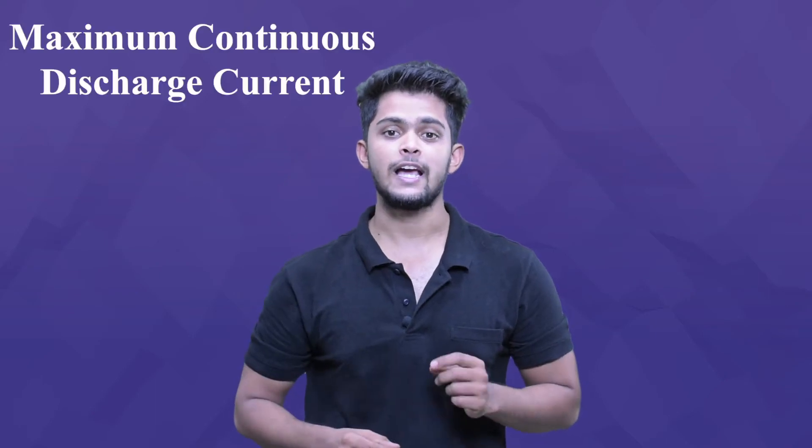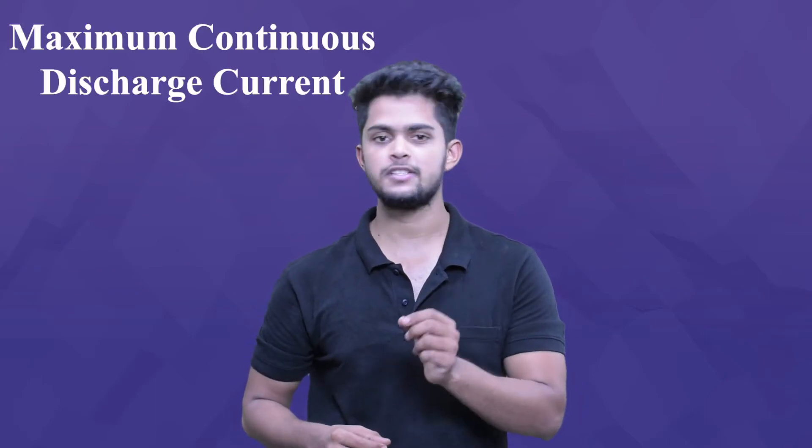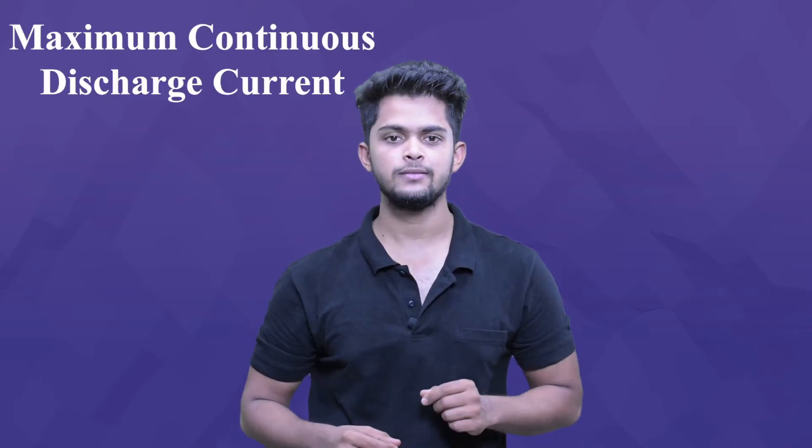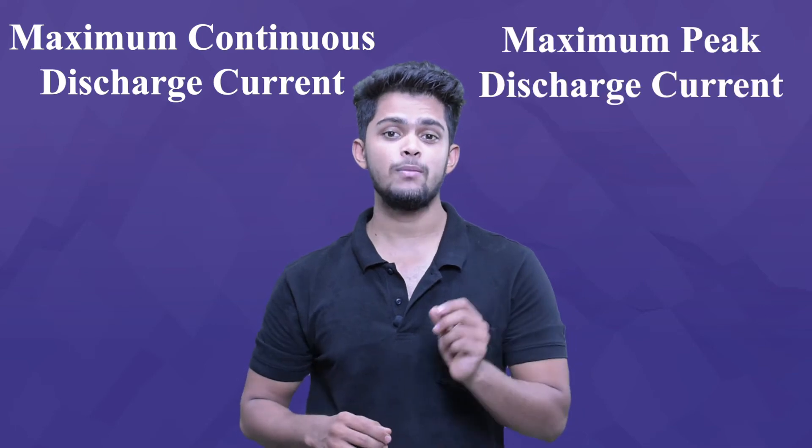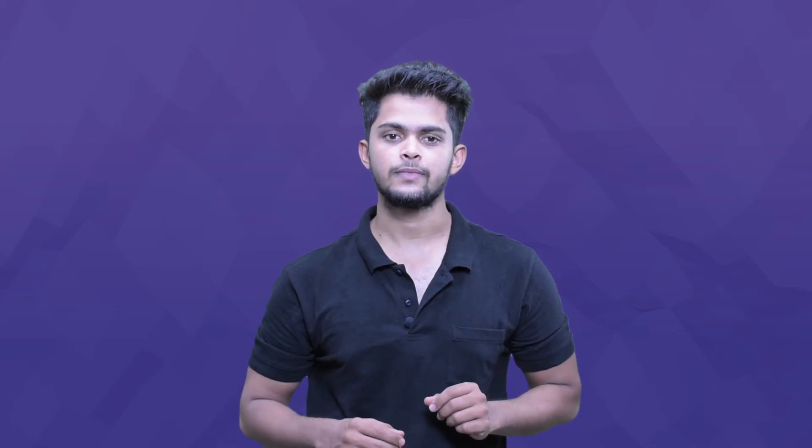Maximum discharge rate tells us the maximum current that can be drawn from the cell. There are two common discharge rating methods: the first one is maximum continuous discharge current, and the second one is maximum peak discharge current.